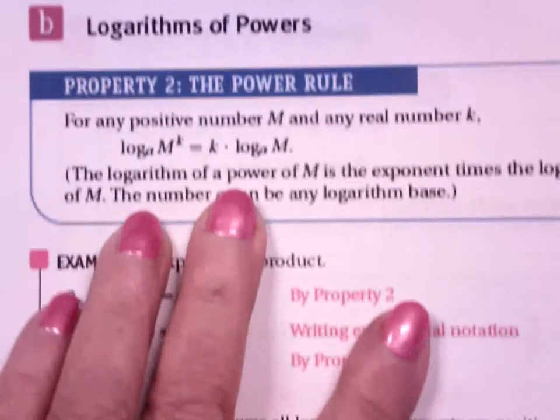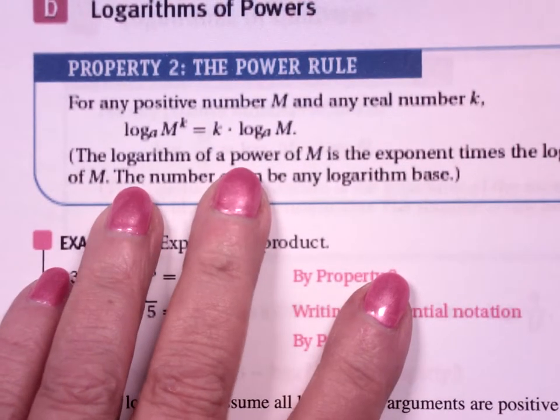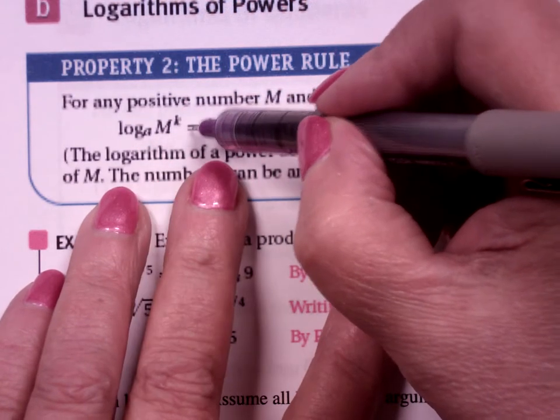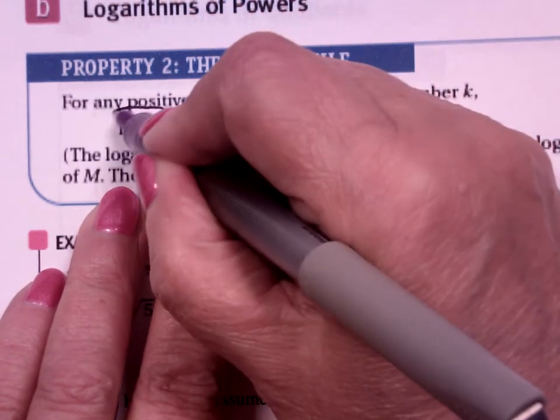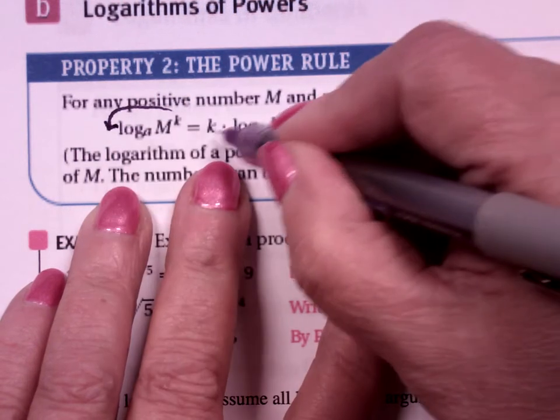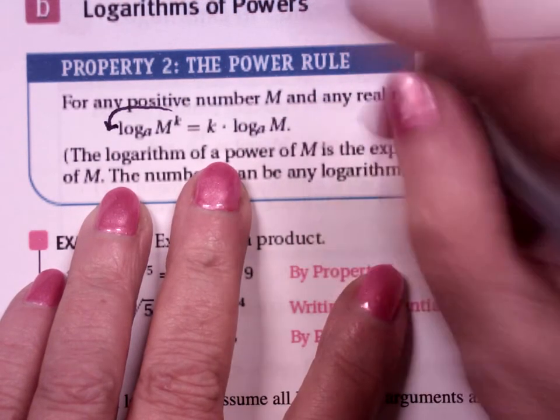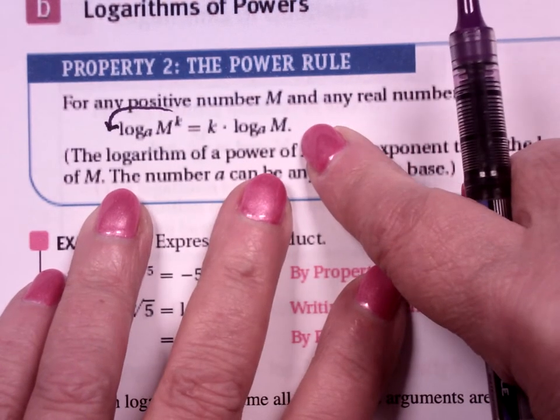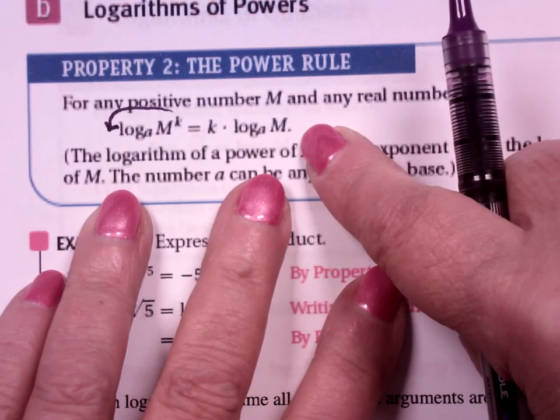Here's the property of log that will match up with that. If I have log base a of m to the k, it's equal to k times log base a of m. You can bring the k down in front. k is an exponent and the log is an exponent. You're taking the product of two exponents.